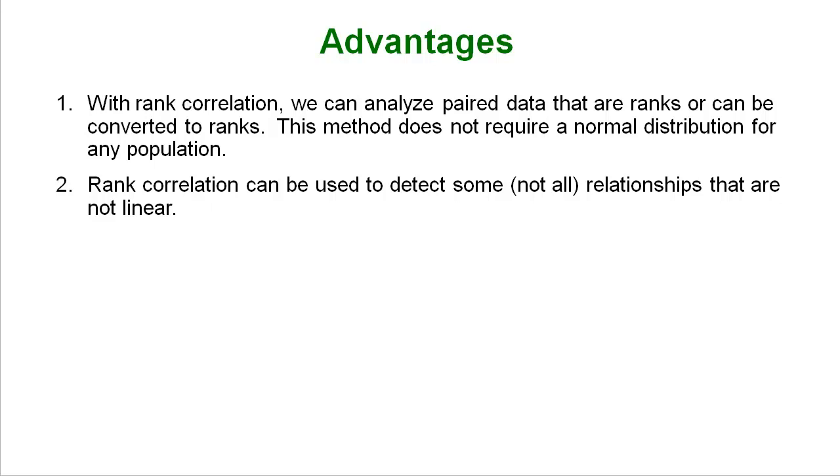Another key advantage is that often times ranked correlations and other nonparametric tests are able to detect some relationships that aren't linear. If you have a relationship between two variables that isn't particularly linear, and remember we always want to do our scatter plots first to get a picture of what's going on with our data. When you see something that isn't linear sometimes you can detect that relationship using a nonparametric test. Not always but sometimes.